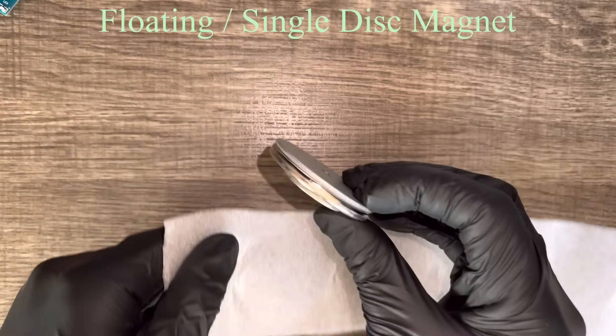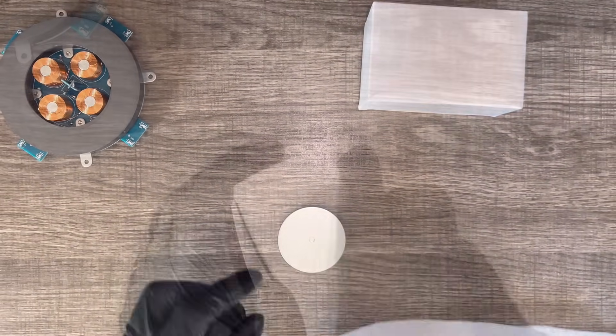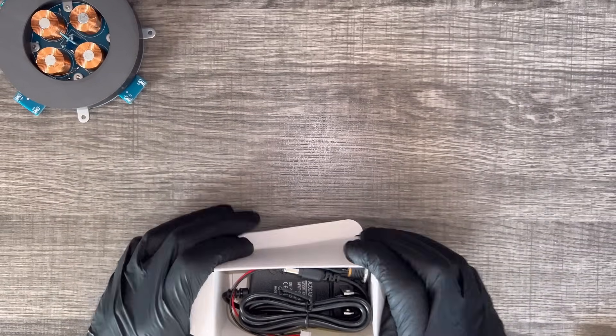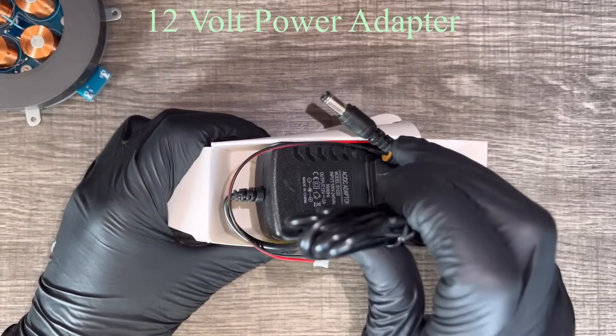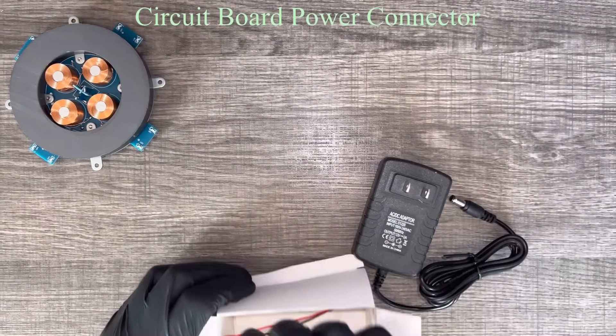Here we have a single disc magnet attached to the floating magnet. Here we have the 12 volt power adapter along with the circuit board power connector.